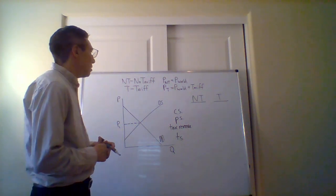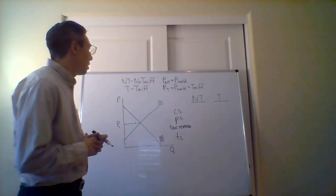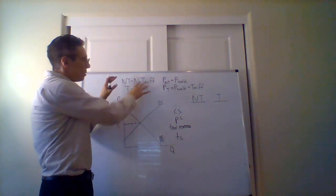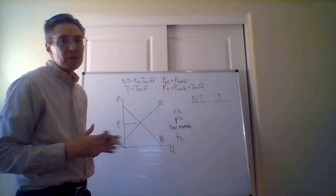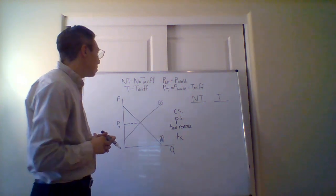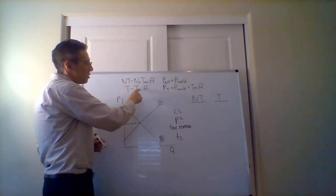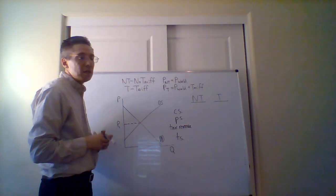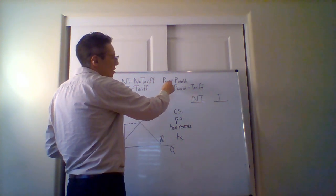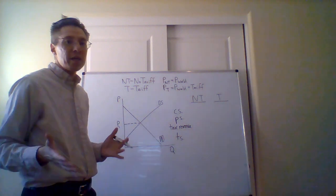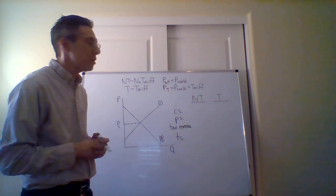What we're going to talk about is the effect of a tariff in terms of total surplus. I've put up a key so you understand the abbreviations. NT is supposed to represent no tariff, T is supposed to represent having a tariff. The price at no tariff means the world price — there is trade, just trade without any type of trade protection.